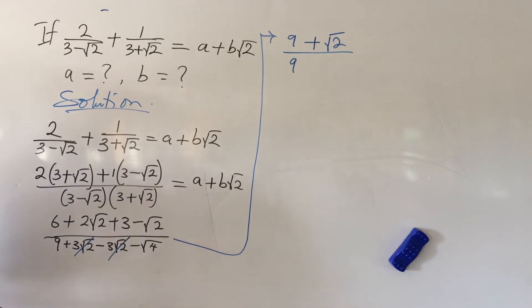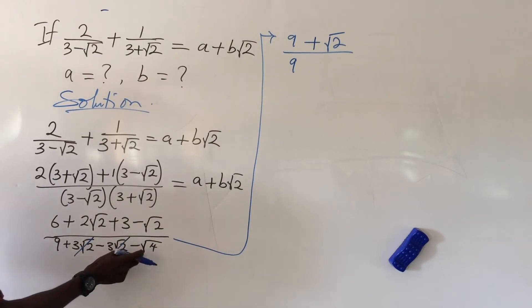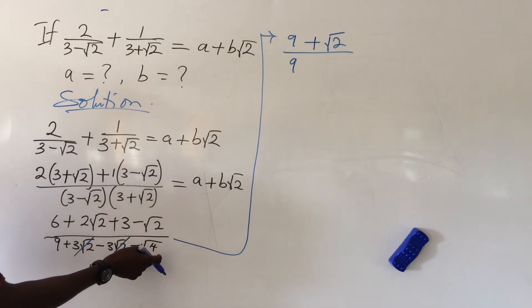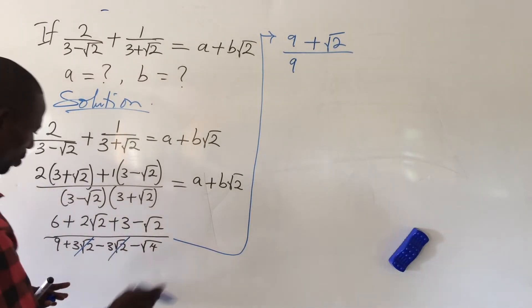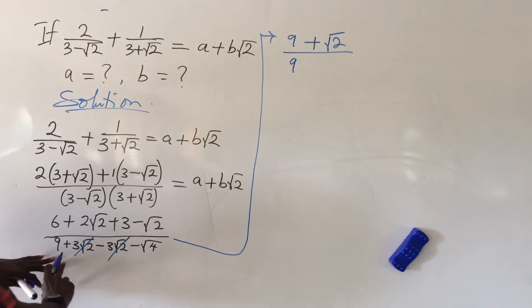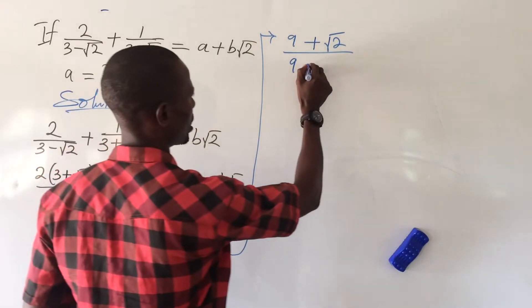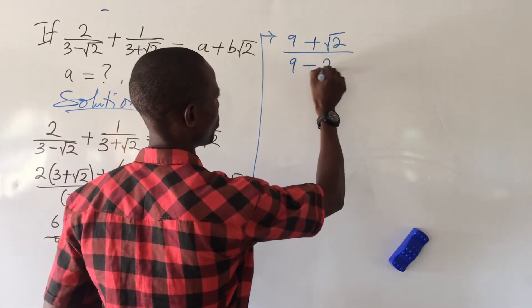The 3 root 2 and minus 3 root 2 cancel each other out. Root 4 is 2, so the denominator becomes 9 minus 2.